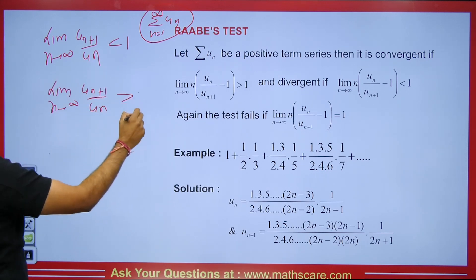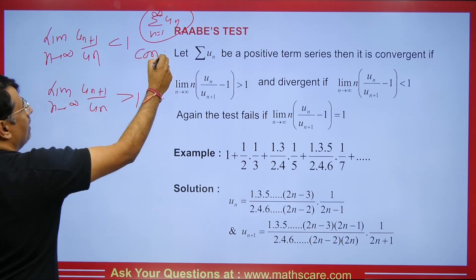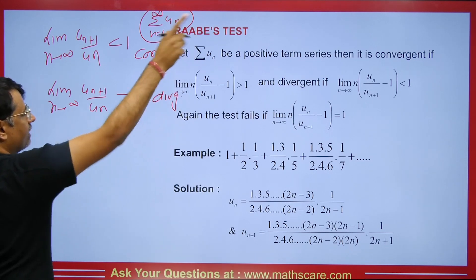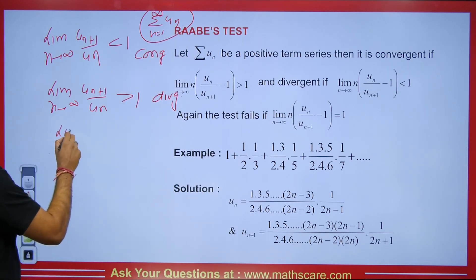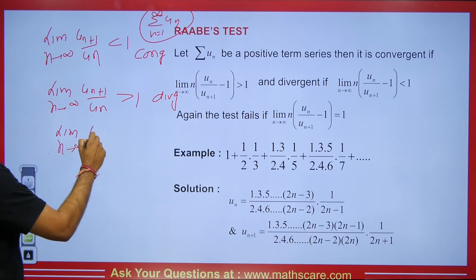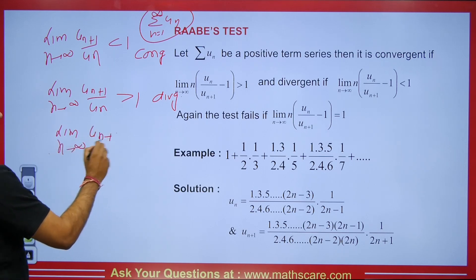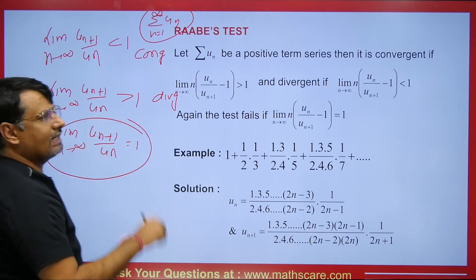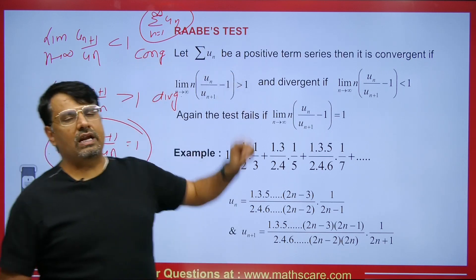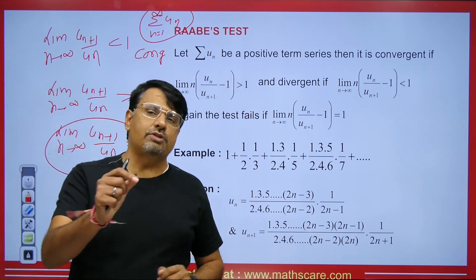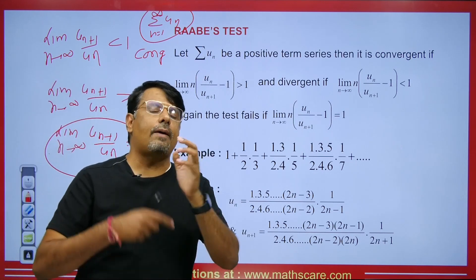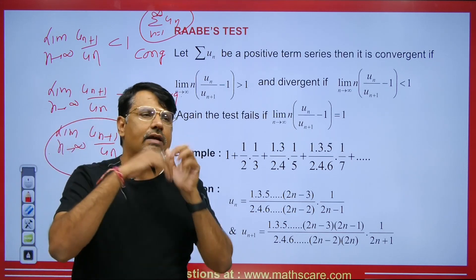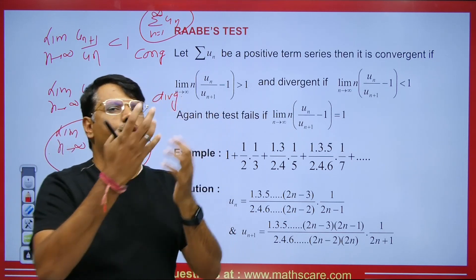And if the limit of u_{n+1} / u_n equals 1, then this D'Alembert Ratio Test fails and we apply Raabe's Test here. I also want to inform you that we have a logarithmic test which can also be applied if the D'Alembert Ratio Test fails.